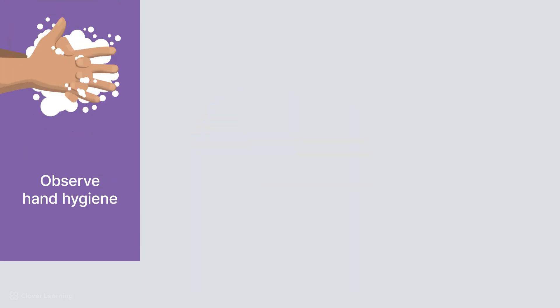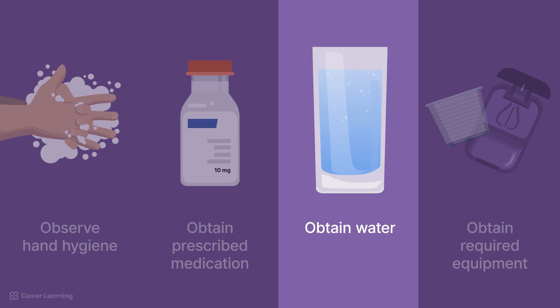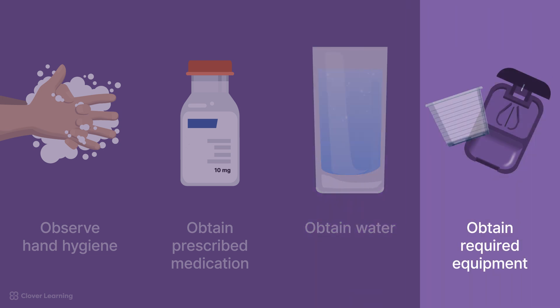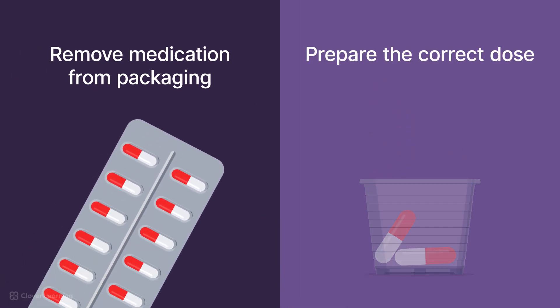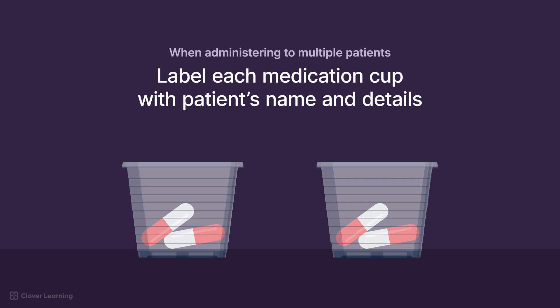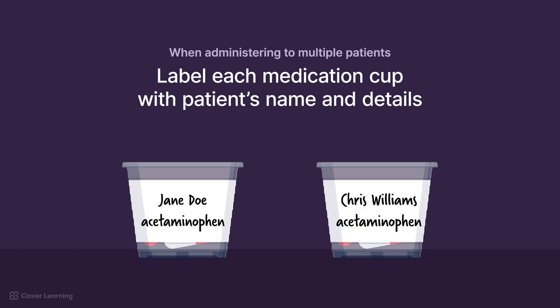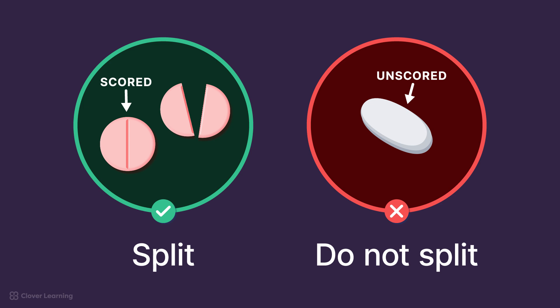For oral administration, first observe proper hand hygiene procedures to prevent the spread of infection, since you may have to touch the medication. Next, obtain the prescribed medication, a glass of water or appropriate fluid for swallowing, and any required equipment, such as a medication cup or a pill splitter. Remember that you do not split or crush time-release or extended-release medications. Remove the medication from its packaging, avoiding touching it if possible, and prepare the correct dose. If necessary, use a pill splitter for accurate dosing. If administering medications to multiple patients, label each medication cup with the patient's name and medication details. Note that you should only split pills that are scored at their center; unscored tablets should not be split unless directed in the order, and then only with a pill cutter.